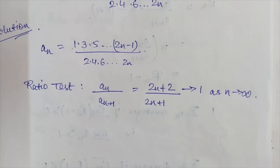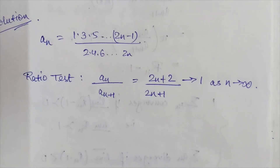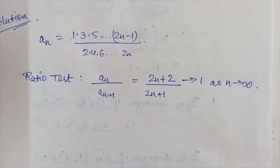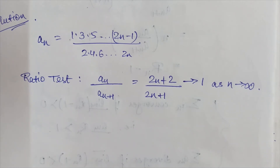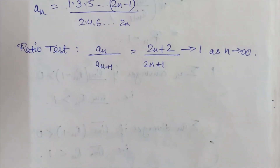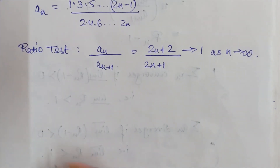So the ratio test does not give a definite conclusion. We need to know that when the ratio test fails, we can at once try Gauss's test without going through the other tests.